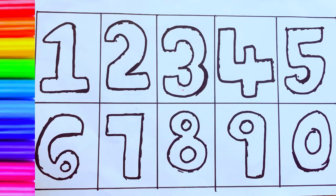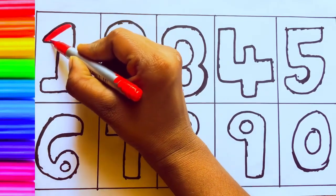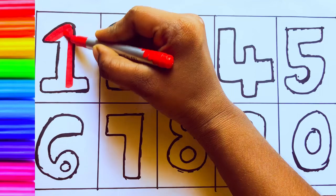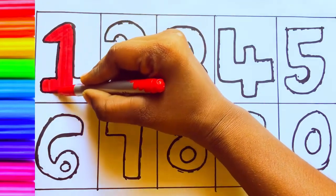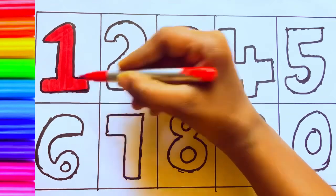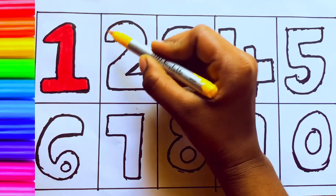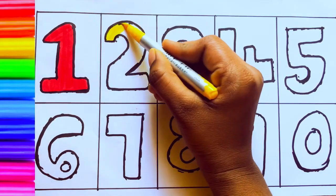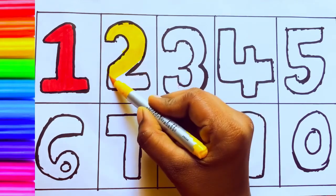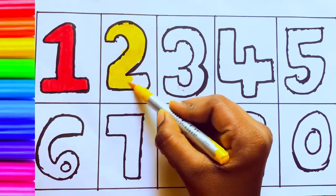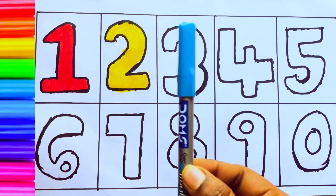Let's draw the numbers. Red color, 1, O-N-E, number 1. Yellow color, 2, number 2.